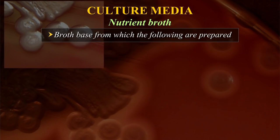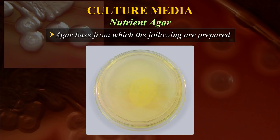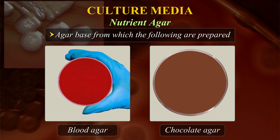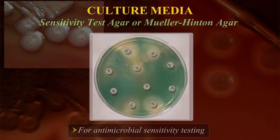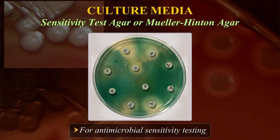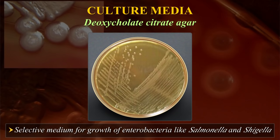Nutrient broth is a broth base from which nutrient broth, cooked meat broth, etc. can be made. Nutrient agar is used to make blood agar, chocolate agar, etc. McConkey agar is used mostly as an indicator medium for gram-negative bacteria. Sensitivity test agar or Mueller-Hinton agar is used for antimicrobial sensitivity testing. Deoxycolate citrate agar is a selective medium for growth of enterobacteria like Salmonella and Shigella.